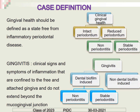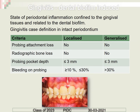Dental biofilm-induced gingivitis is periodontal inflammation confined to gingival tissues related to dental biofilm. It is defined as localized if there is no probing attachment loss, no radiographic bone loss, less than 3 mm pocket depth, and 10 to 30 percent of sites showing bleeding on probing. It is called generalized gingivitis if there is no attachment loss, no bone loss, less than 3 mm pocket depth, and bleeding on probing present on more than 30 percent of teeth.